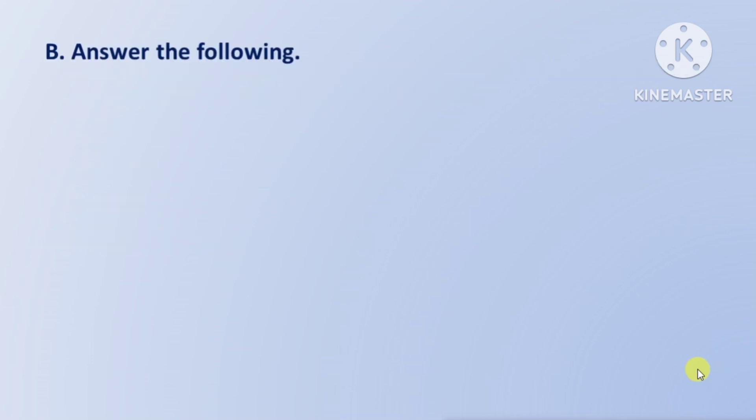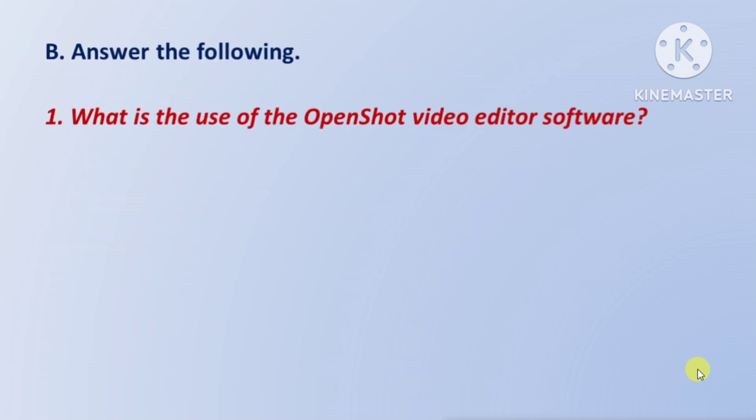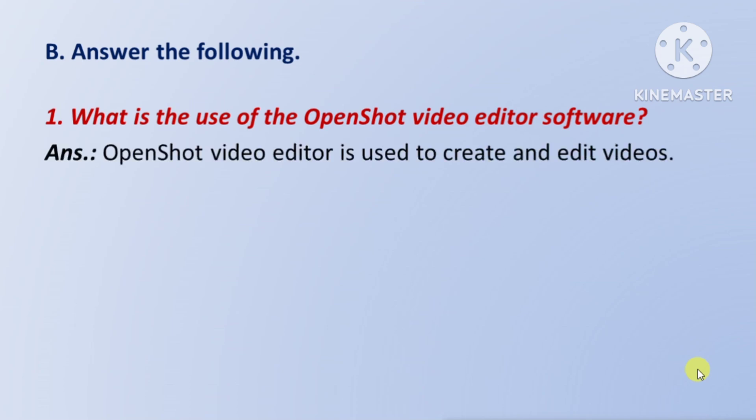Section C: Answer the Following. First question: what is the use of the OpenShot video editor software — means OpenShot video editor software ka use kya hai? Answer: OpenShot video editor is used to create and edit videos — means OpenShot video editor ka prayog kiya jata hai videos ko create aur edit karne ke liye.